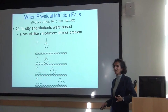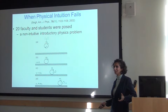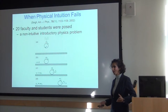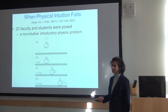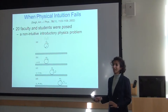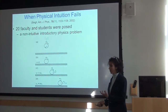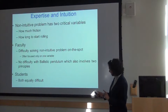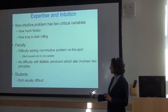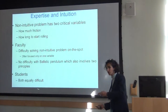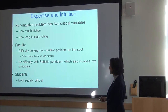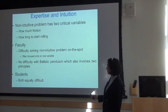It turns out that the final answer here is that the final speed is independent of the coefficient of friction. Professors provided all kinds of answers. The reason this problem is non-intuitive is that there are two things you need to worry about: one is the coefficient of kinetic friction, and the other is how long does it take to start to roll without slipping — when does it lock in? Faculty had difficulty solving this problem because they often focused on one variable or the other.